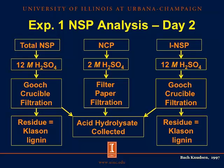On day two, the total NSP procedure and the insoluble NSP procedure follow the same steps: you add 12 molar sulfuric acid to swell the cellulose and break down all cellulose and NSP to their monosaccharides. The non-cellulosic polysaccharide procedure uses only 2 molar sulfuric acid, without swelling the cellulose, because you do not want to account for cellulose in that procedure. The total NSP and insoluble NSP are then filtered through Gooch crucibles; the remaining residue is Klason lignin — insoluble to 12 molar sulfuric acid. The NCP procedure is filtered through filter paper, and all three procedures then collect the acid hydrolysate containing all individual sugars composing the non-starch polysaccharides.